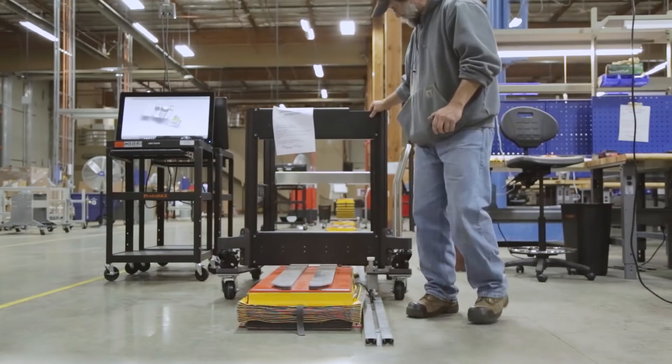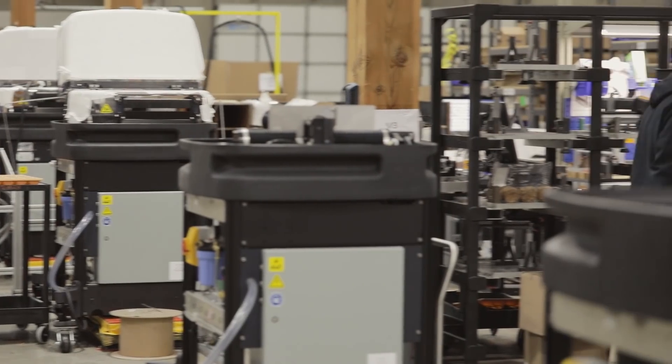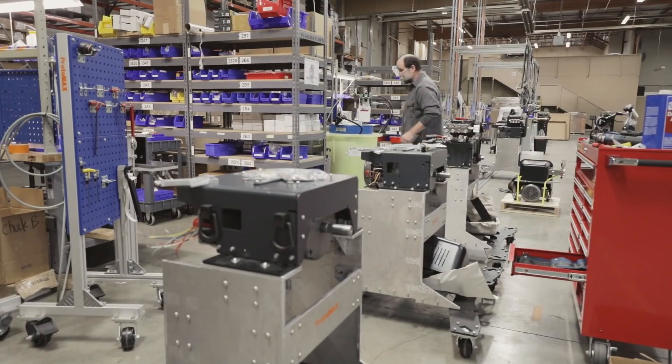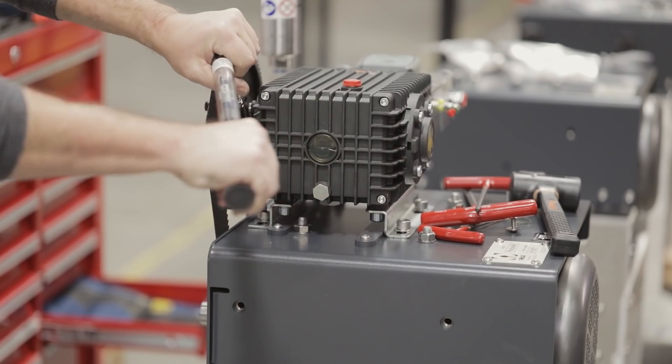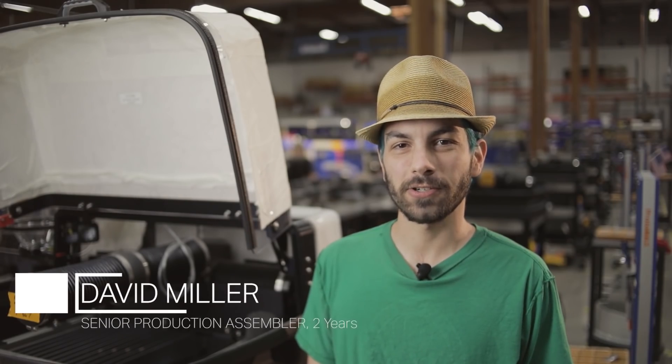The Protomax is the first waterjet to integrate the cutting components and pump into a compact footprint at an affordable price, making it ideal for smaller space-constrained machine shops, maker spaces, and classroom-style workshops. Innovation in waterjet technology means innovation in waterjet manufacturing. For the Protomax, we utilize a moving assembly line to streamline production and maximize build quality.